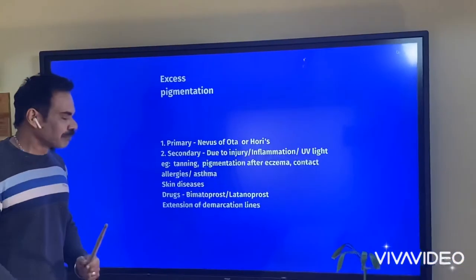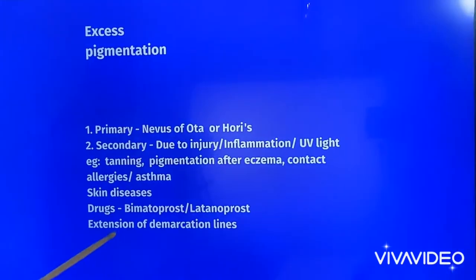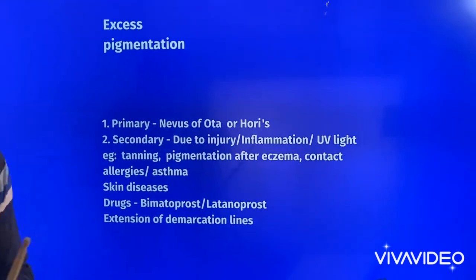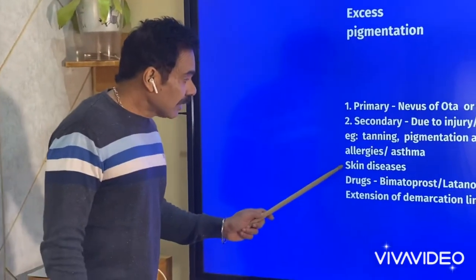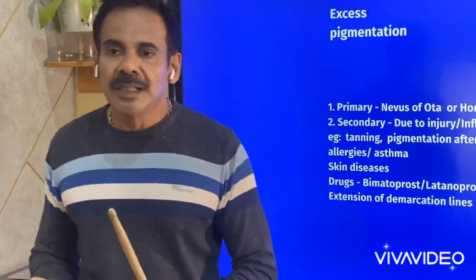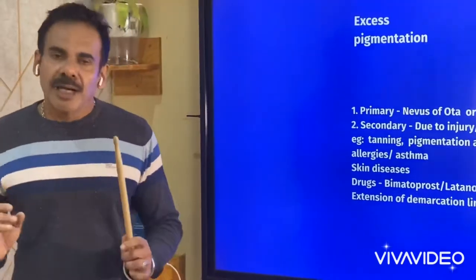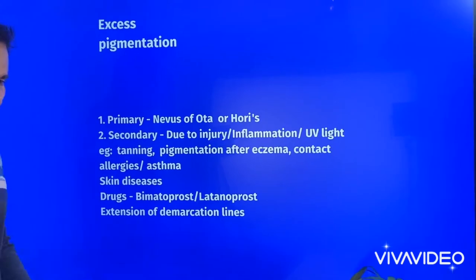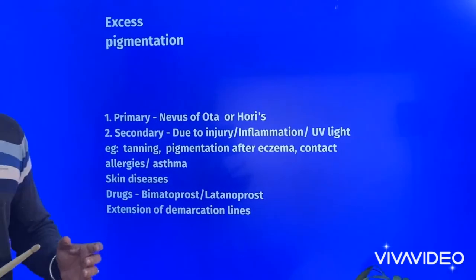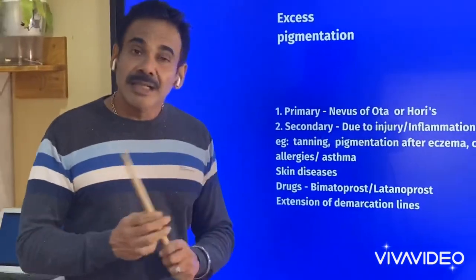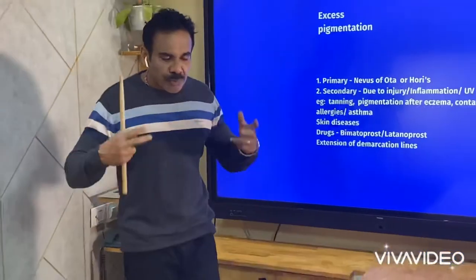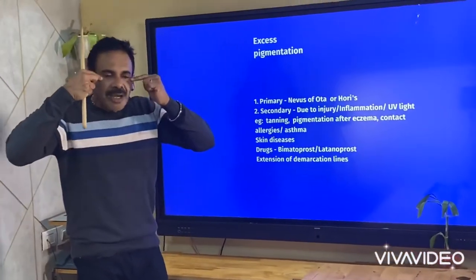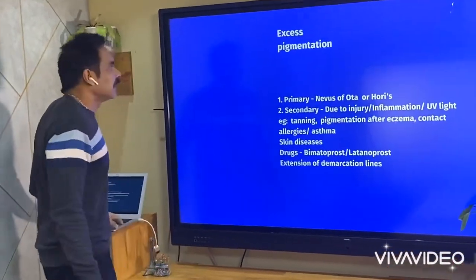After eczema or frequent rubbing can give rise to post-inflammatory hyperpigmentation. Contact dermatitis can also cause hyperpigmentation. Most asthma patients will have pigmentation under the eye. Certain skin diseases like lichen planus pigmentosus can also give rise to under-eye pigmentation appearing bluish in color. Certain drugs like bimatoprost and latanoprost used for glaucoma - though very good for eyelash growth - can rarely give rise to under-eye pigmentation. Demarcation lines at the sides of the eye extending under the eye are another cause.